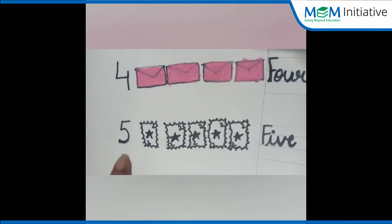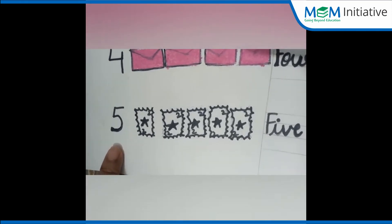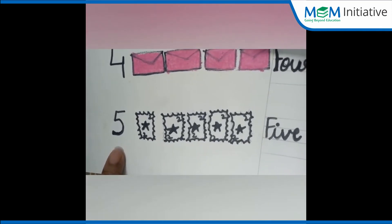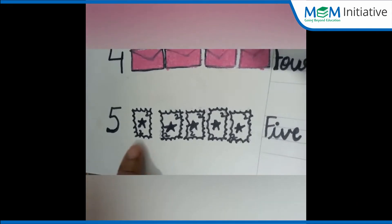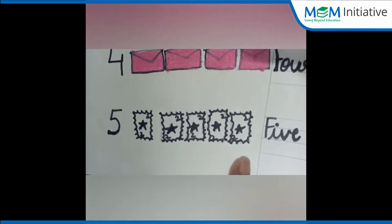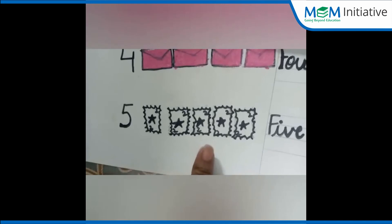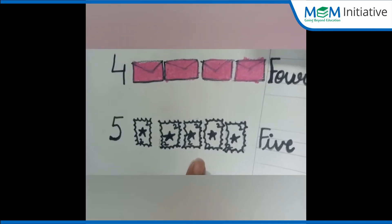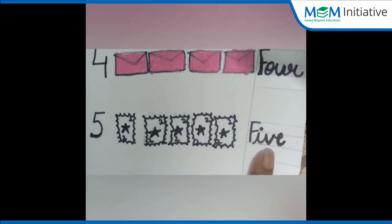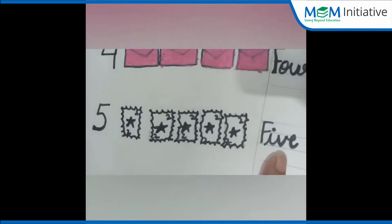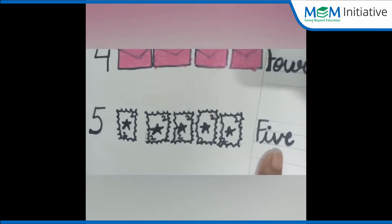What number is this, children? Yes, this is number 5. And ma'am has drawn 5 stamps. How many stamps are there? 5 stamps. And what number name is this? This is number name 5.